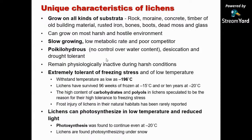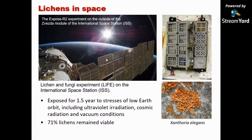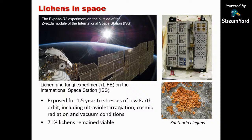Lichens can also photosynthesize at low temperatures and in reduced light, which is why you sometimes see lichens growing in caves or under snow. Because lichens are such hardy organisms, they have also been sent to space for experiments. In the International Space Station experiment called LIFE — Lichen and Fungi Experiment — the lichen Xanthoria elegans was exposed for 1.5 years to the stress of low Earth orbit, including ultraviolet radiation, cosmic radiation, and vacuum conditions. When brought back to Earth, 71% of the lichens remained viable. Lichens can serve as an experimental model for extreme experiments and theories about life on other planets.